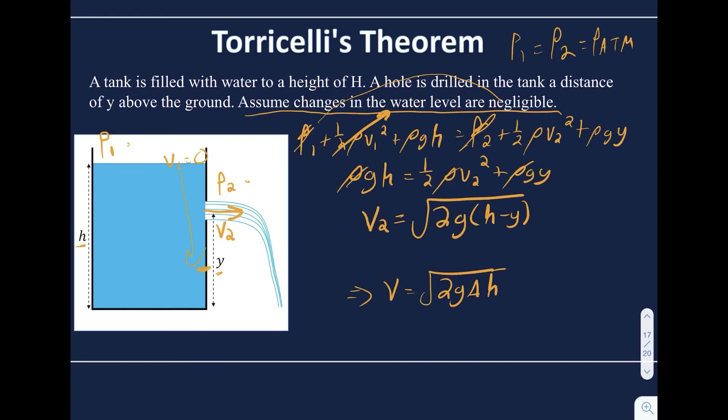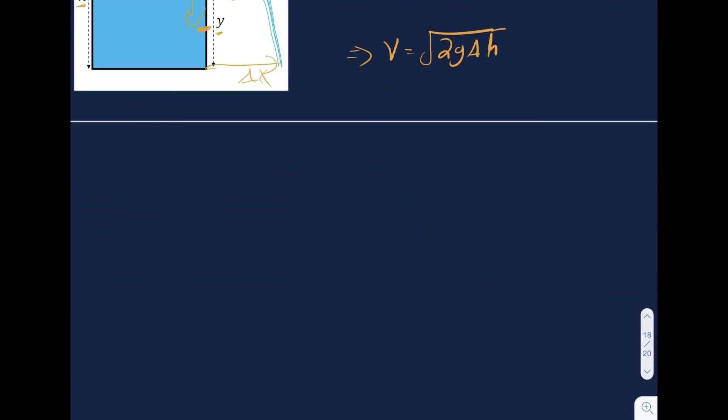Something the AP exam likes to ask about is the horizontal range delta x — when is that maximized? The deeper the hole is, the faster the water will be, but also the less time it's in the air. So it's going to have its maximum range exactly halfway to the top of the water level. And that's Torricelli's theorem — and that is it for fluid dynamics.